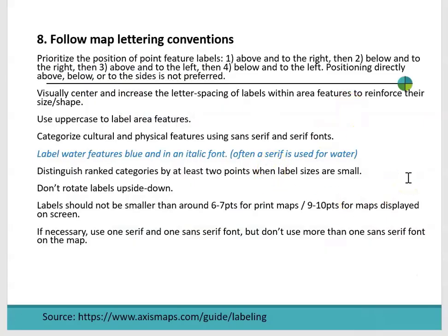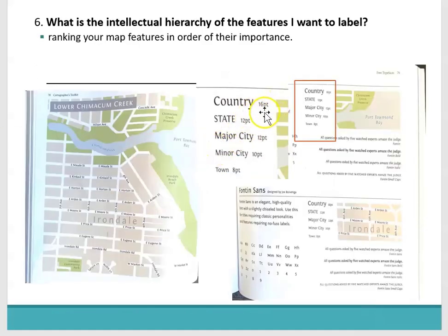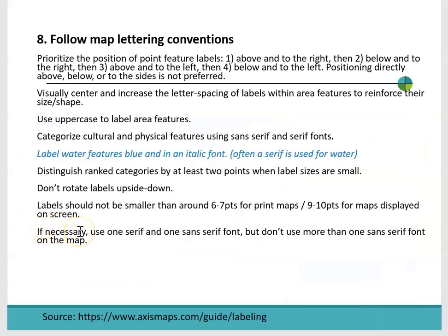Distinguish ranked categories by at least two points when labeling sizes. What that means is what I was talking about in the beginning — you don't go from 16 to 15, or 12 to 11. You go 16 to 12, 12 to 10, 10 to 8 — so by twos. Don't rotate labels upside down. Labels should not be smaller than six points. If necessary, use one serif and one sans serif font, but do not use more than one serif font on the map. Typically you just want two fonts: a serif for geographic features and water, and a sans serif for everything else.